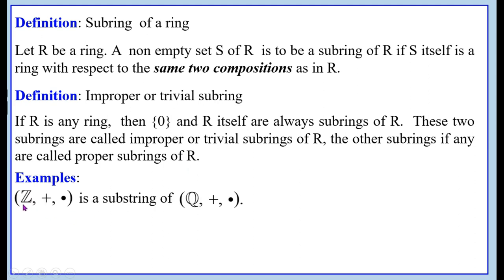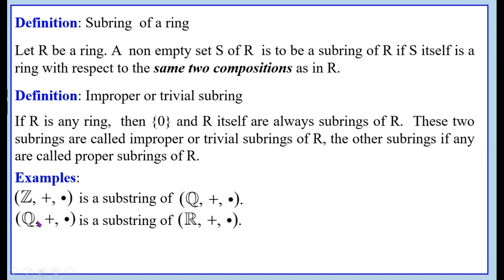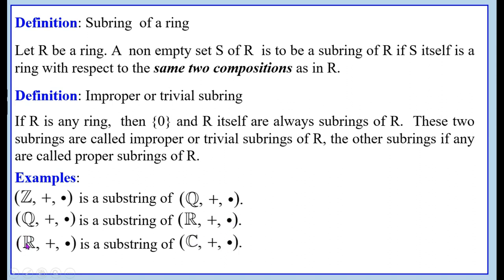Examples. The set of integers with respect to ordinary addition and ordinary multiplication is a sub-ring of the set of rational numbers with respect to ordinary addition and ordinary multiplication. The set of integers with respect to addition and multiplication is also a sub-ring of the set of real numbers with respect to addition and multiplication.